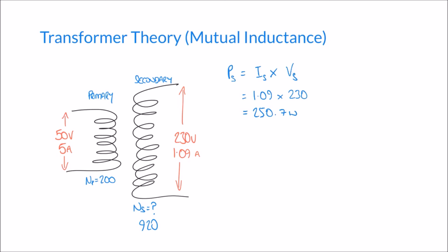This calculation is for an ideal transformer — one that suffers no losses. In reality, when a transformer induces a current and voltage in the secondary coil, the process is not perfect and energy is lost along the way. So an ideal transformer, while useful for calculations, isn't truly representative of a real transformer.